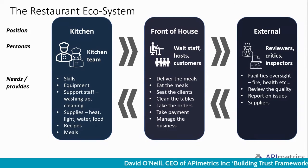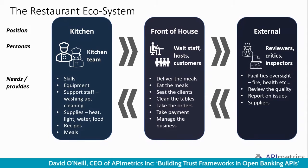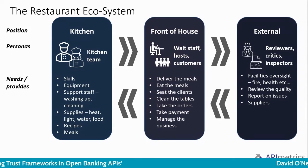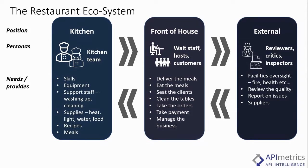On the other side of the restaurant wall, you have the front of house — the area people sit in — with staff who seat you, clear tables, take payments, and customers eating meals, plus the person managing the entire business. Things move back and forth between the kitchen and front of house. And then outside of that, you have restaurant reviewers, critics, food inspectors, oversight from external services outside your control — the fire department, health and sanitation. They review quality and report on issues. And finally, you have suppliers moving things in and out for both areas.